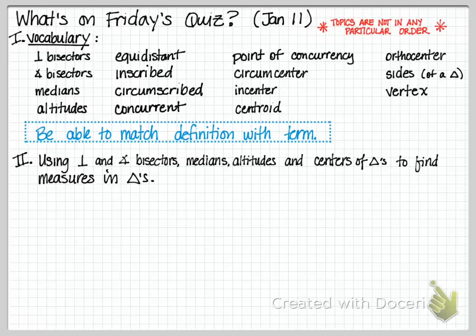Another topic that's on the quiz is using perpendicular bisectors and angle bisectors, medians, altitudes, and centers of a triangle to find the measures in the triangle. Some examples that are similar to ones we've done in the homework are, here's one of them.